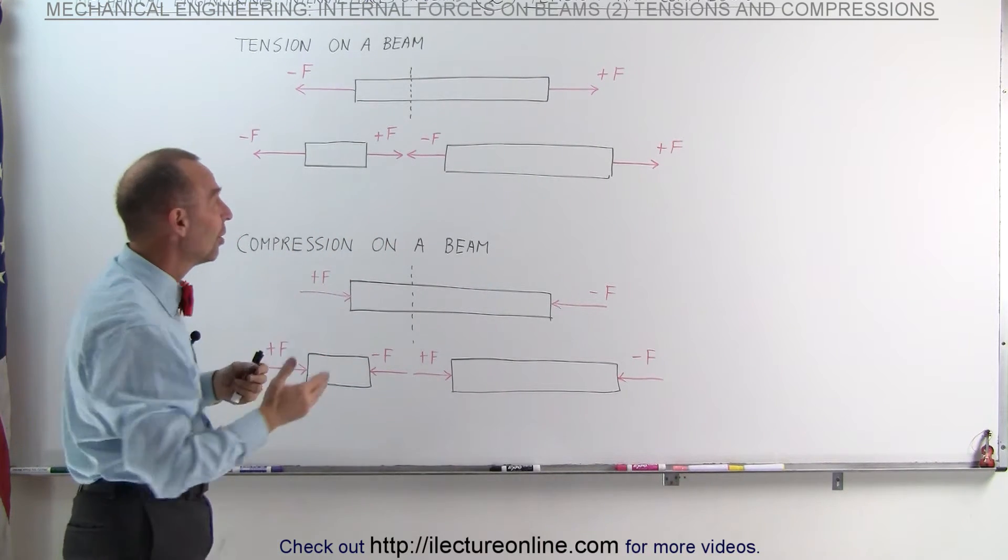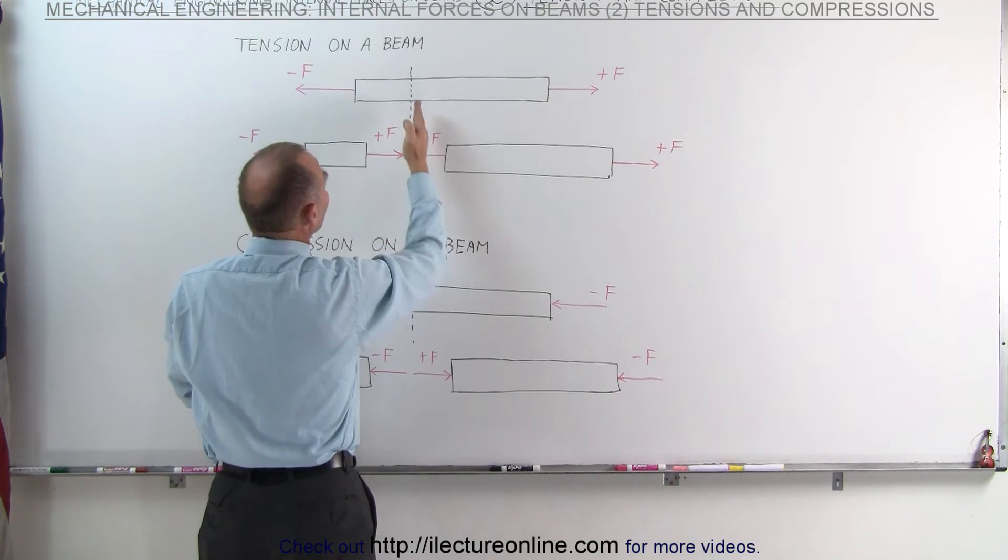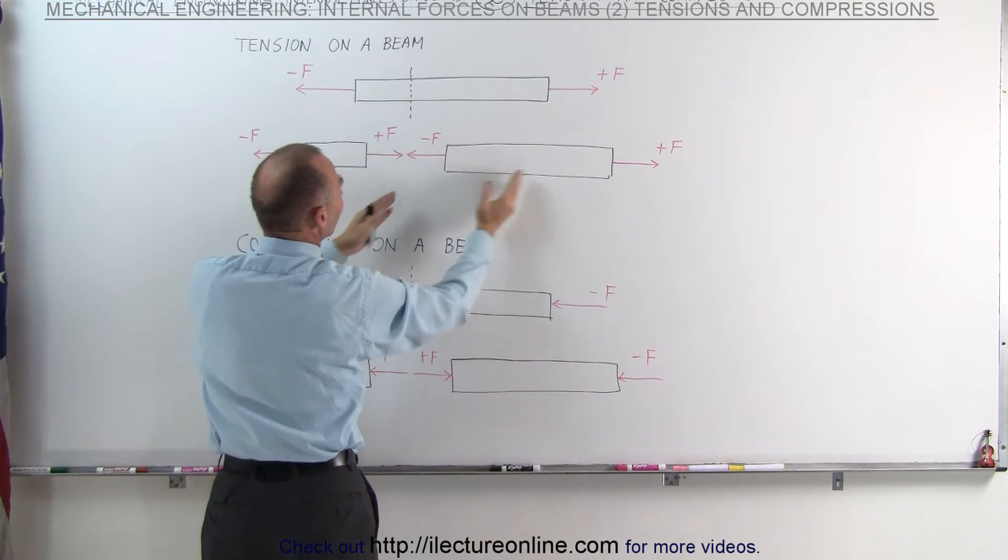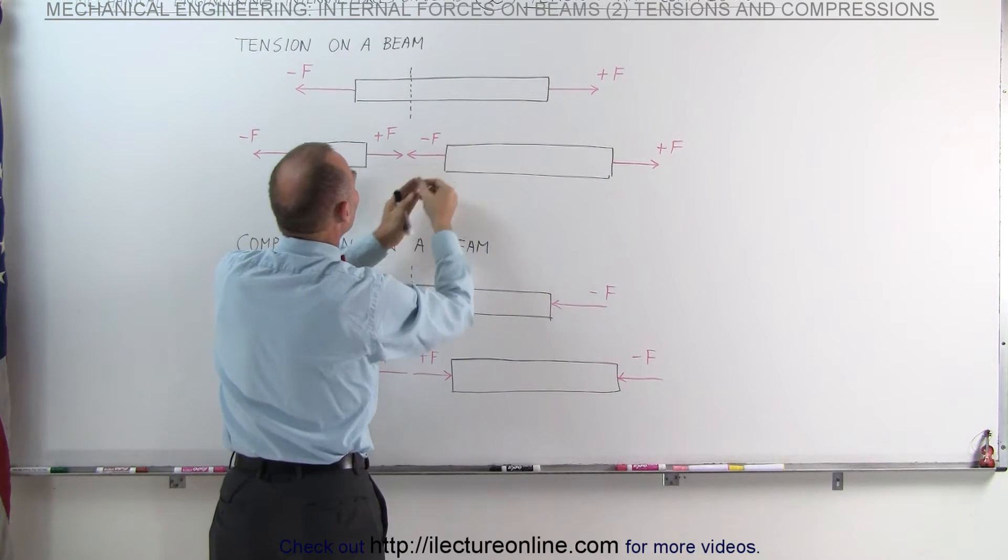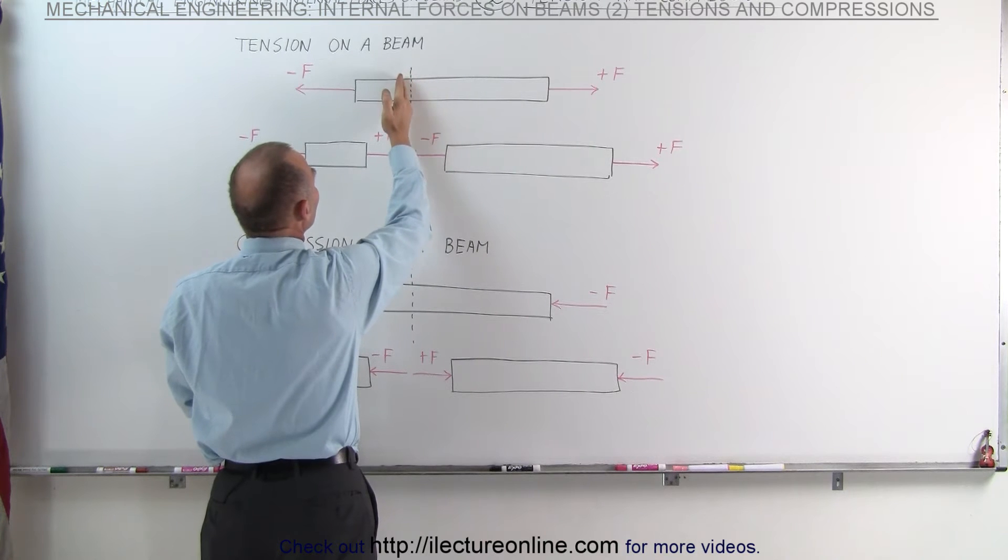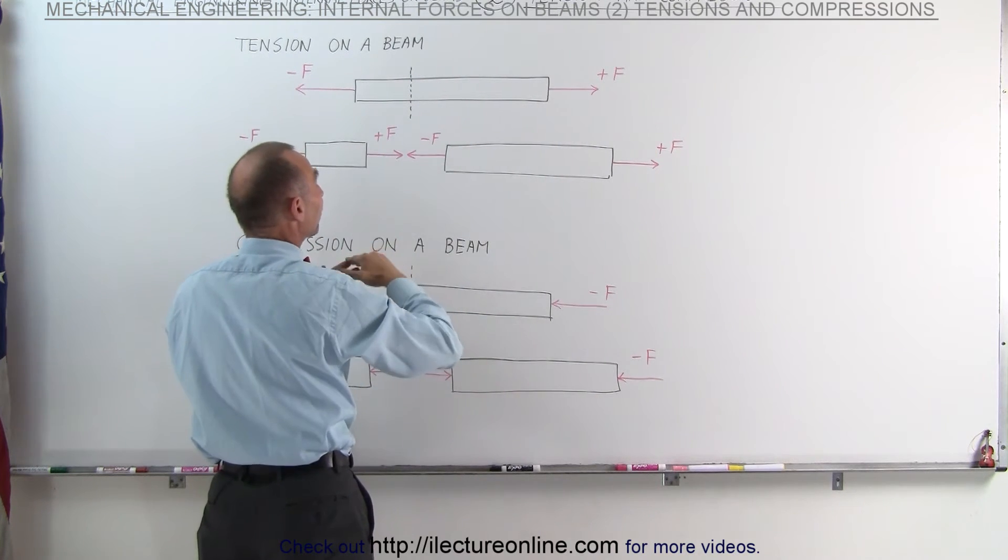Imagine that they're still connected, but if we're taking a look at the individual sections like this, you can see then on the left side of the right section of the beam, we have a force pulling to the left. In other words, the material on the beam on this side is actually pulling on the material on the beam on that side, and vice versa.